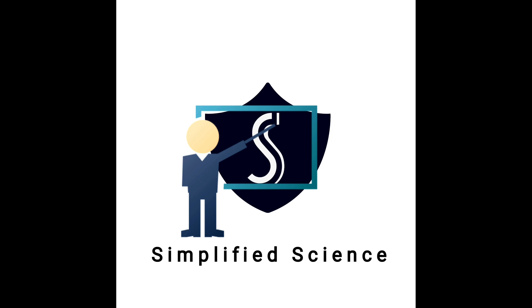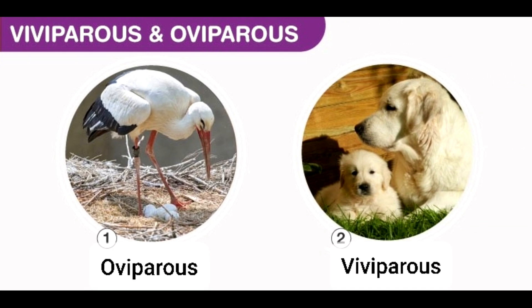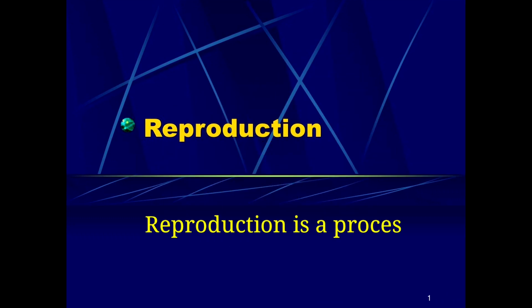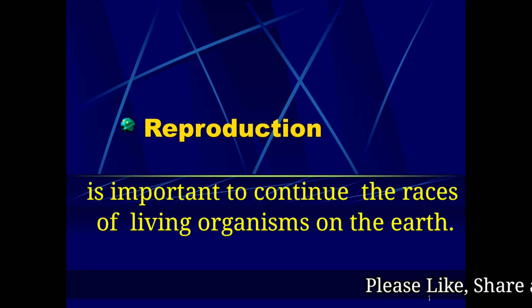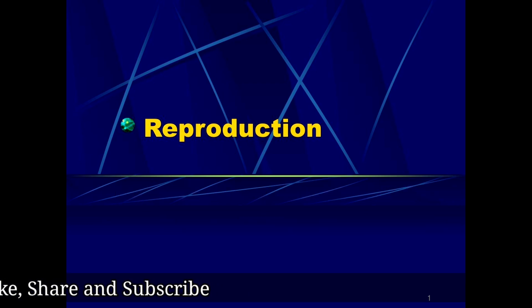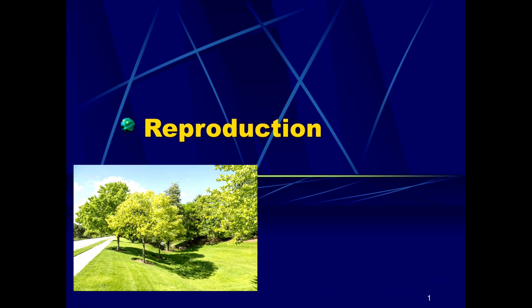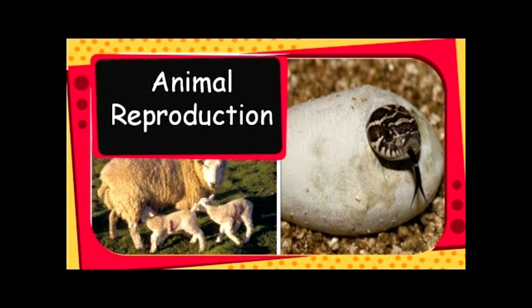Namaste and welcome to all my dear students. In today's class we are going to study about oviparous and viviparous animals. Before that, let's discuss what is reproduction. The process of producing young ones by living organisms similar to themselves is called reproduction. Reproduction is very important to continue the races of living organisms on the earth. Reproduction occurs in both plants and animals, but in today's class we are going to discuss about reproduction in animals only.